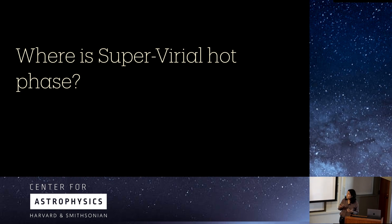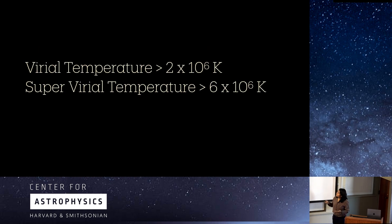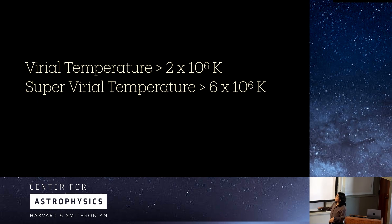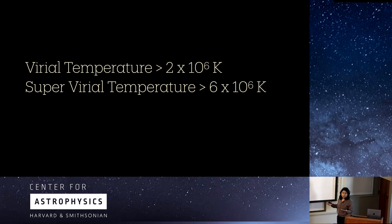I would like to answer the question: where is the super virial hot phase in our galaxy? Before starting, our Milky Way virial temperature is roughly 2×10⁶ K. Super virial temperature is more than the virial temperature. For my work I will be using a cutoff of 6×10⁶ K.